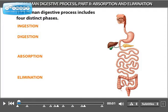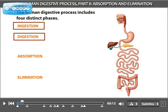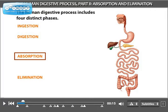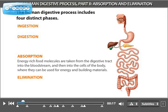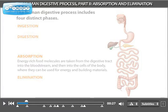A lot of energy is required during the first two phases of human digestion, which involves the chewing, tearing, churning, acidifying, and dismantling of food. Eventually, though, there is a payoff. That payoff is absorption — the process by which the energy-rich food molecules are taken from the digestive tract into the bloodstream and then into the cells of the body, where they can be used for energy and building materials.